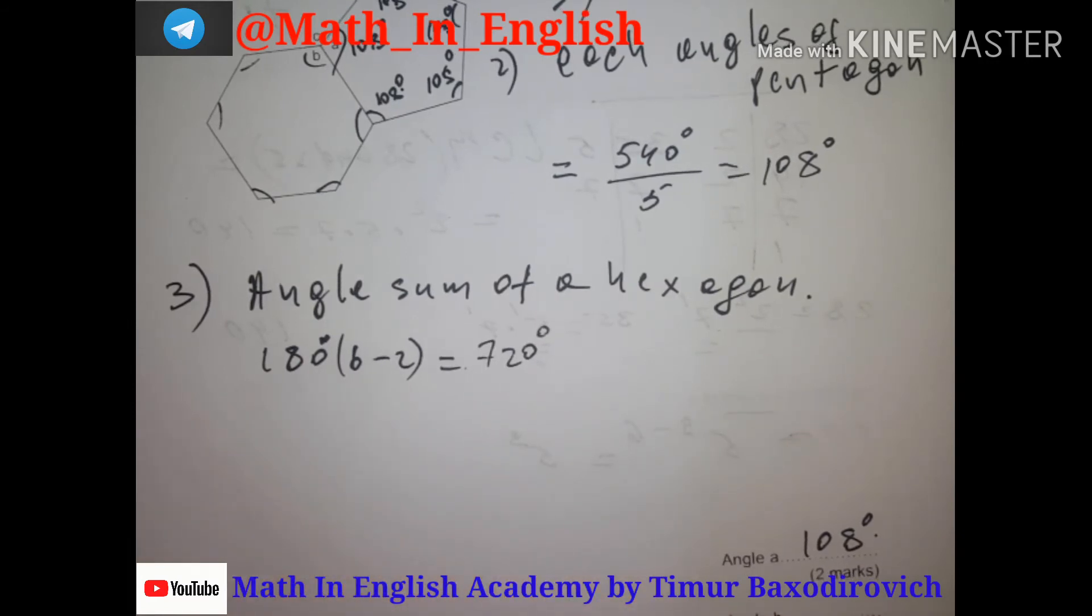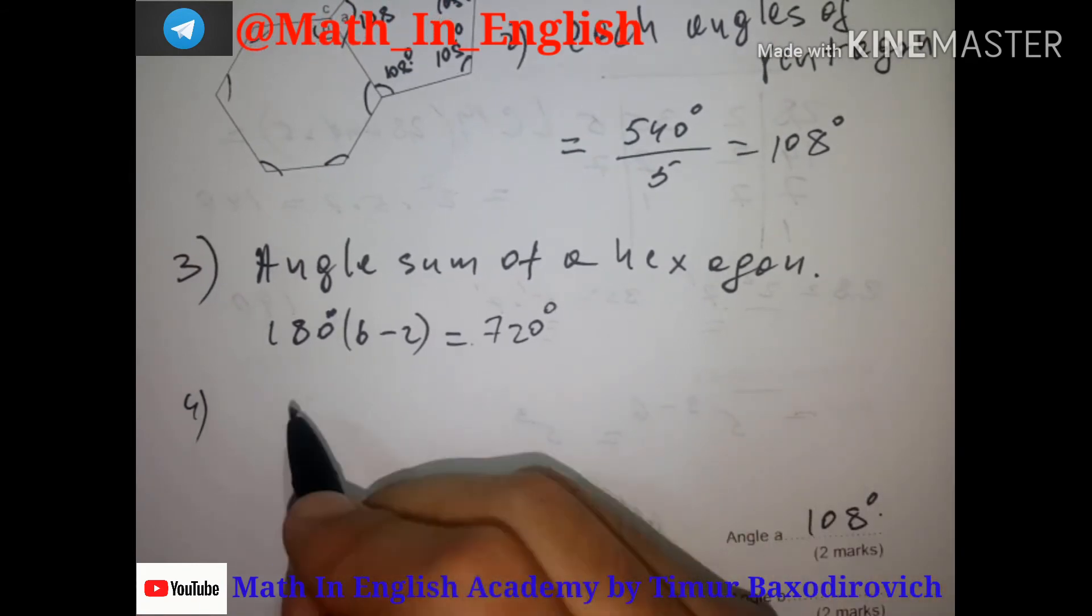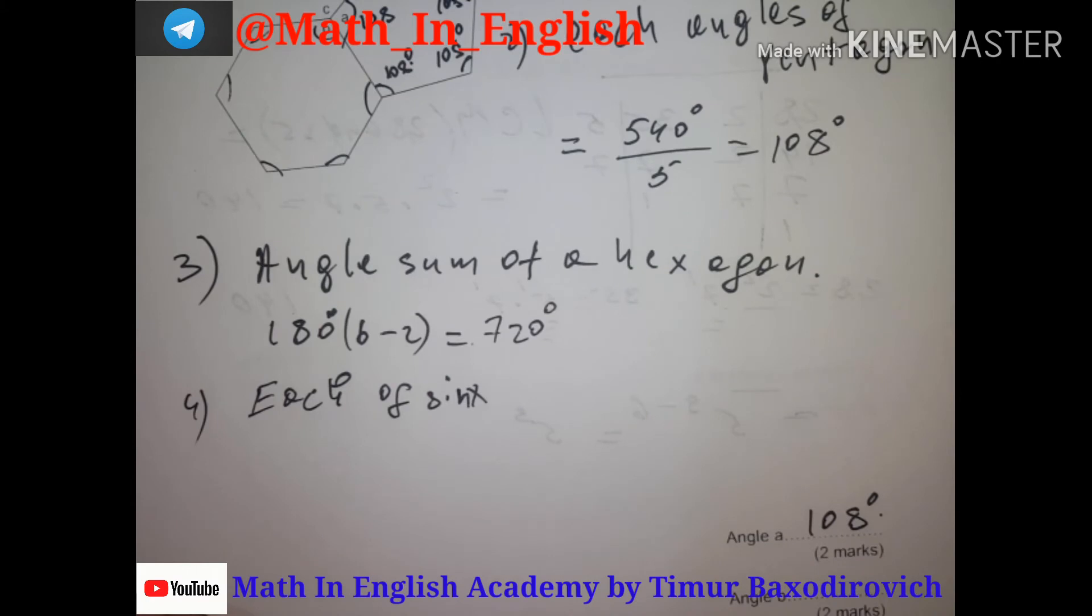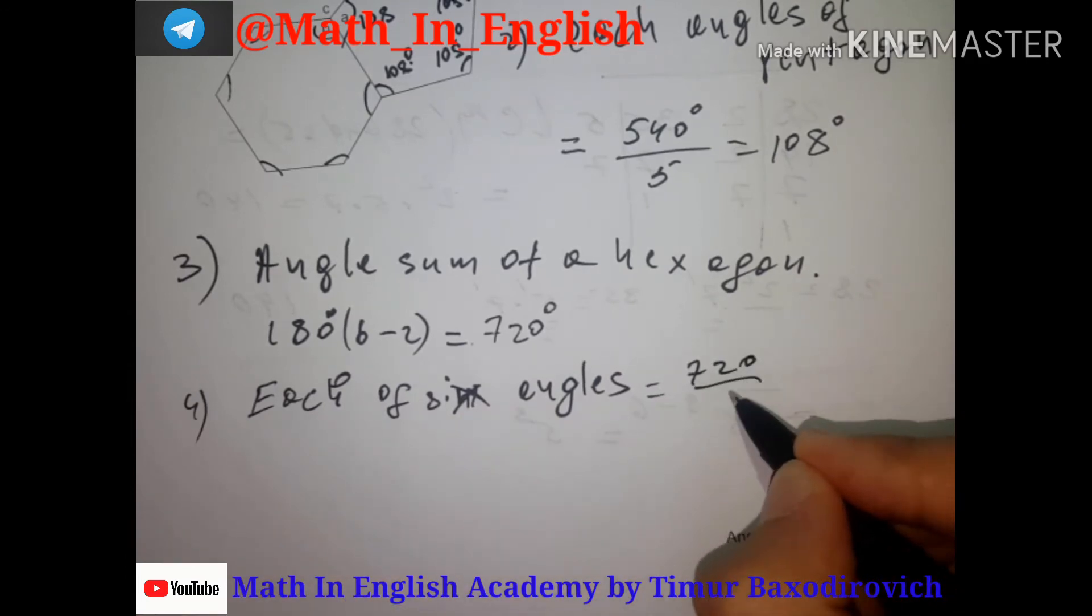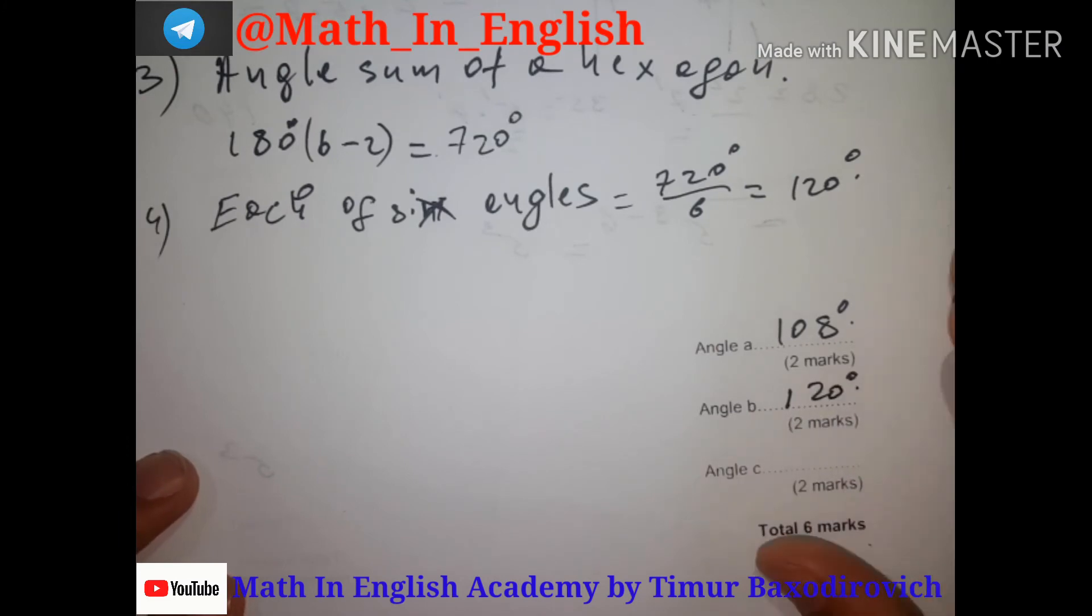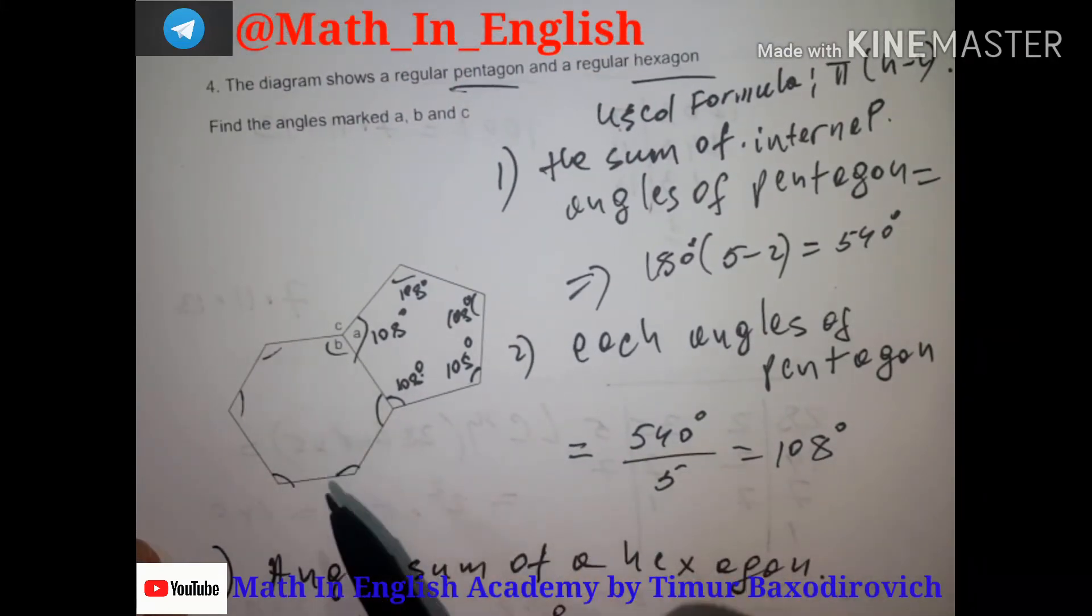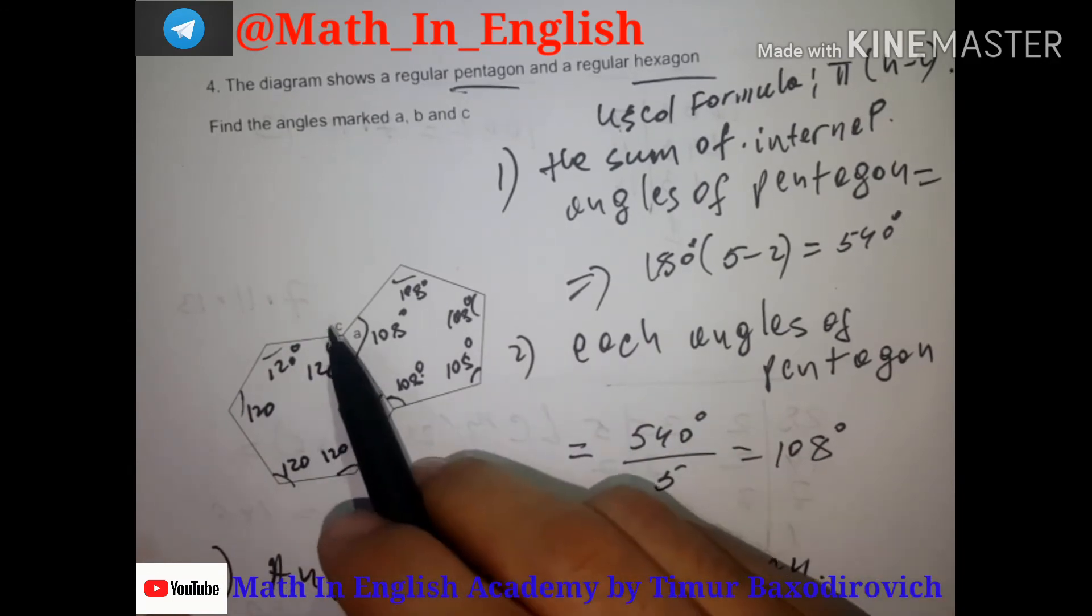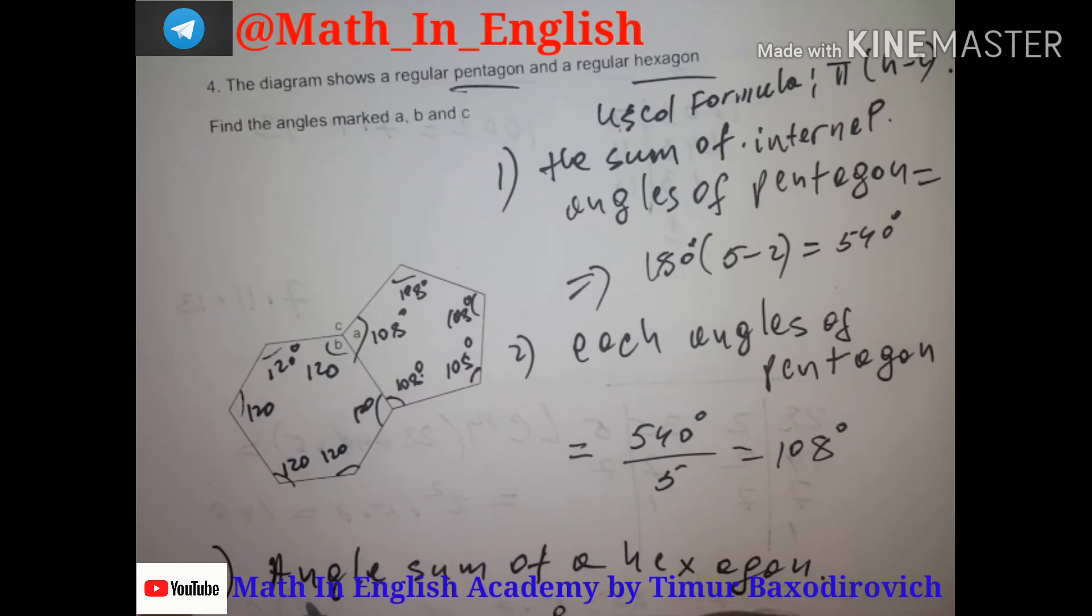When we multiply, this will be 4, so it will be 720 degrees. Again we should find one angle - each angle of this shape. We divide by the number of sides. Each of the six angles will be 720 divided by 6, which equals 120 degrees. We'll write 120 degrees, so c equals 120.